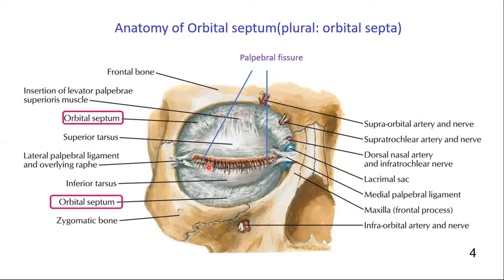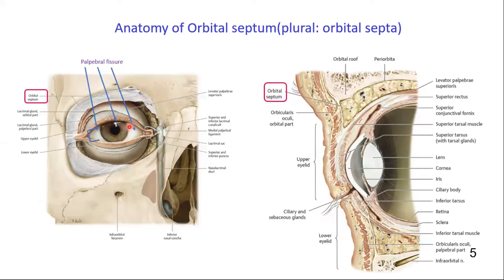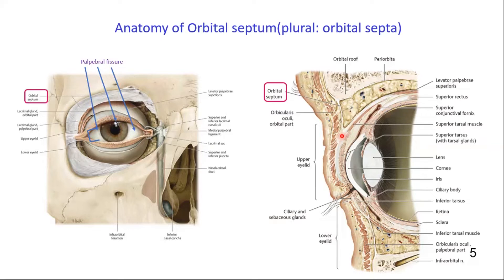The palpebral fissure is the area between the eyelids. Here you can see this is the palpebral fissure, and this is the orbital septum. This is the tendon of the levator palpebrae superioris muscle. Here you can see that the orbital septum blends with the tendon of the levator palpebrae superioris muscle.